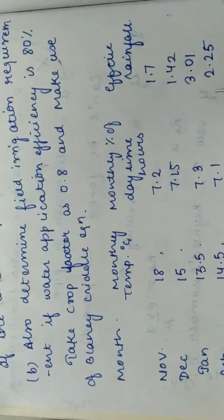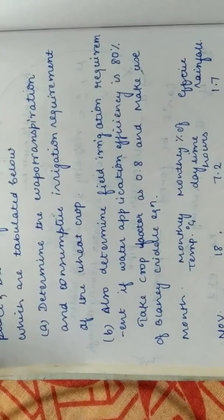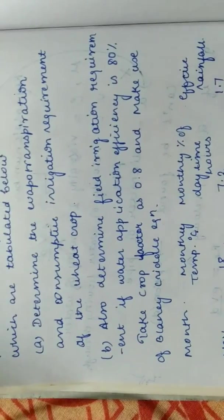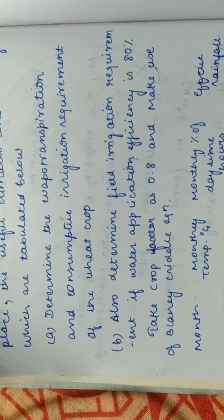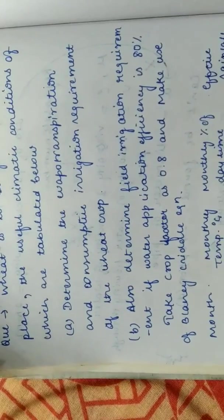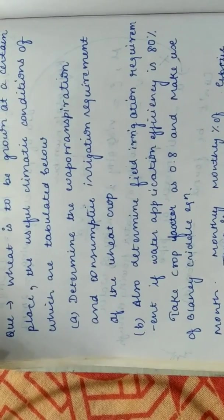Effective rainfall is that rainfall which is available for the crop to grow. So excluding all the losses, that is infiltration, evaporation and runoff. So excluding that whatever is available, that is our effective rainfall.